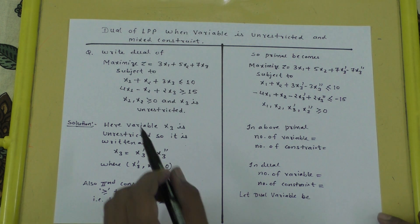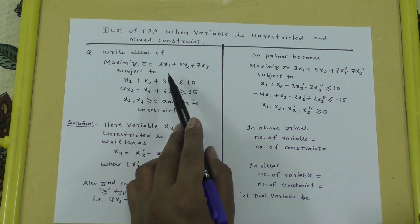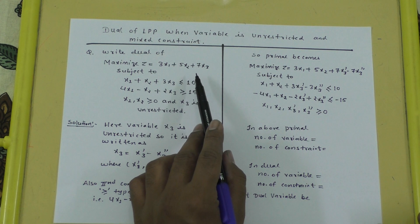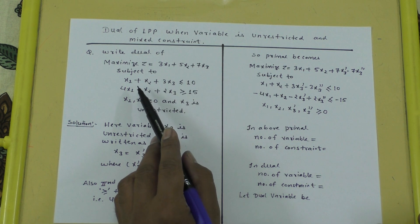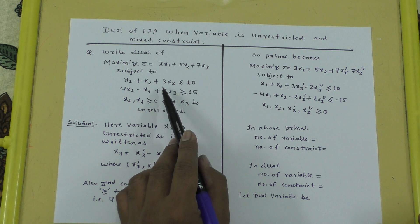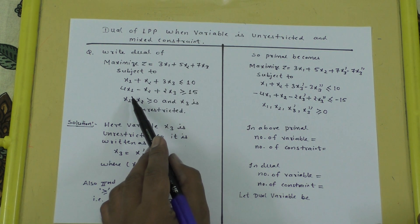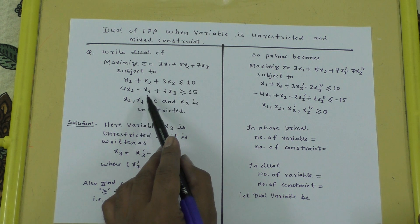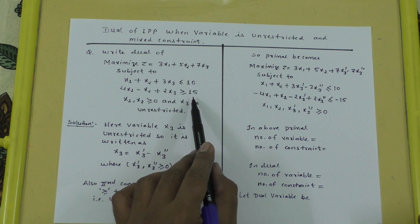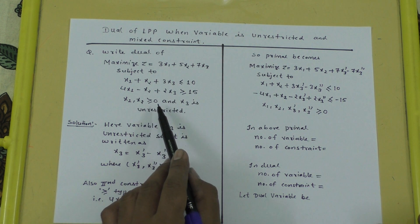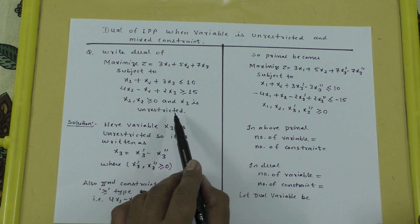The problem is: find the dual of maximize z equals 3x1 plus 5x2 plus 7x3, subject to the constraint x1 plus x2 plus 3x3 less than or equals to 10, and 4x1 minus x2 plus 2x3 greater than or equals to 15, where x1, x2 are greater than or equals to 0 and x3 is unrestricted in sign.